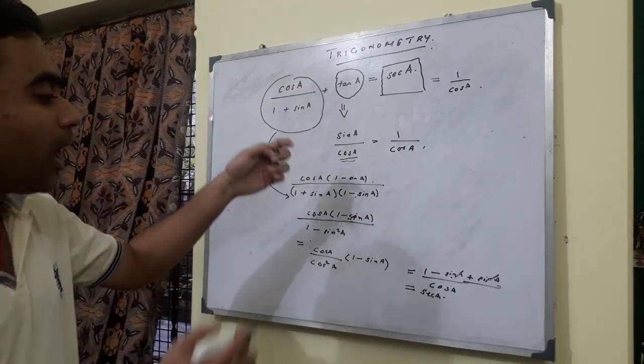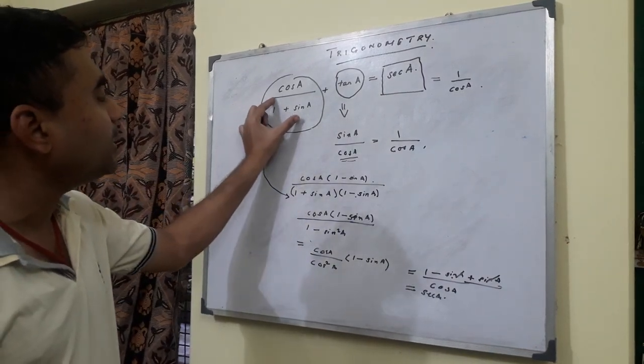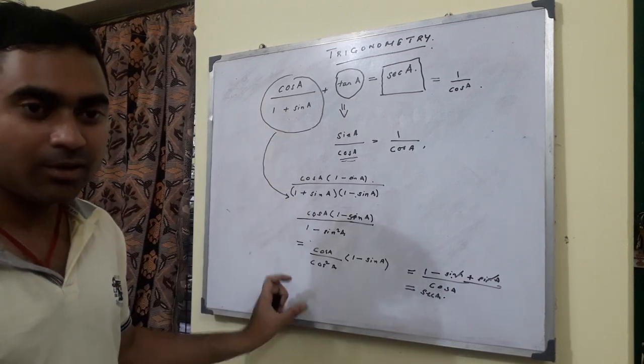What I'm saying is not just what to prove, but why we did it this way. We have to get cos A in the denominator, and this is how I chose to do it. Got it?